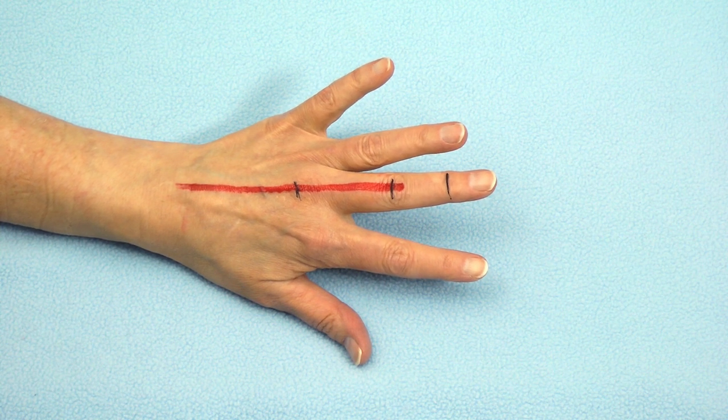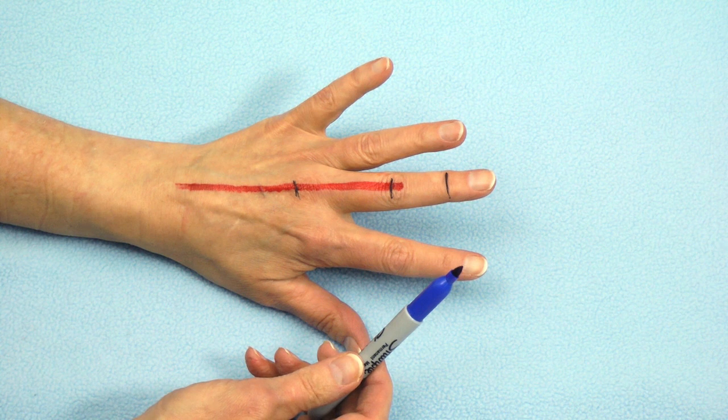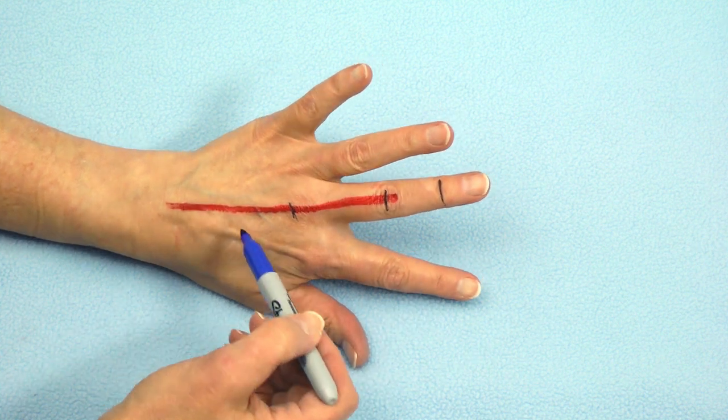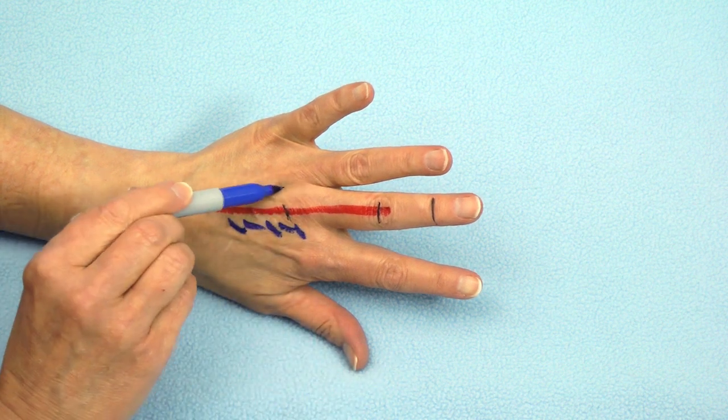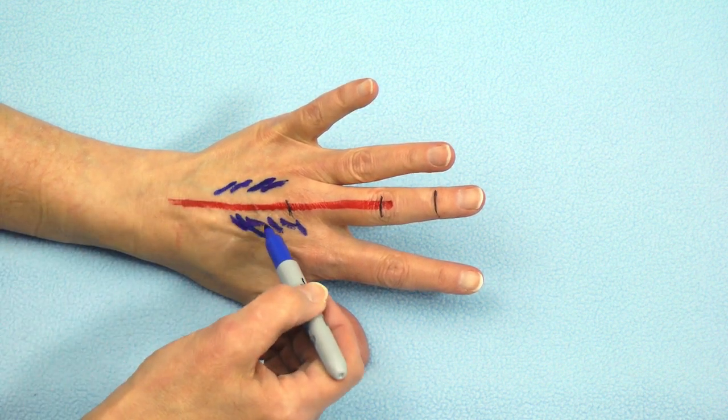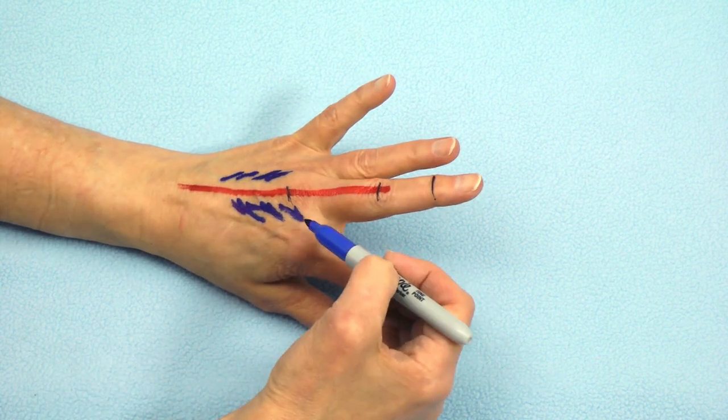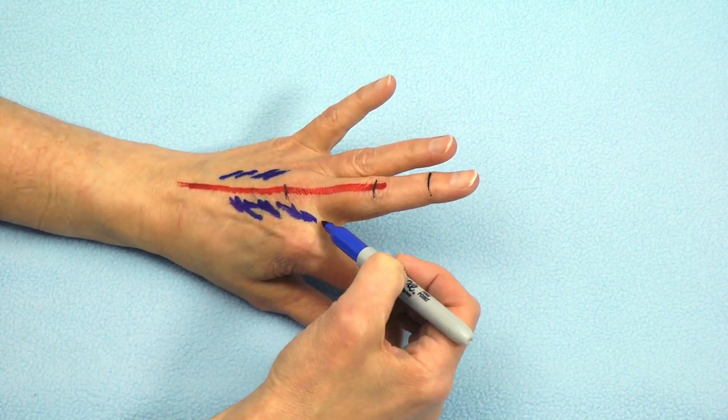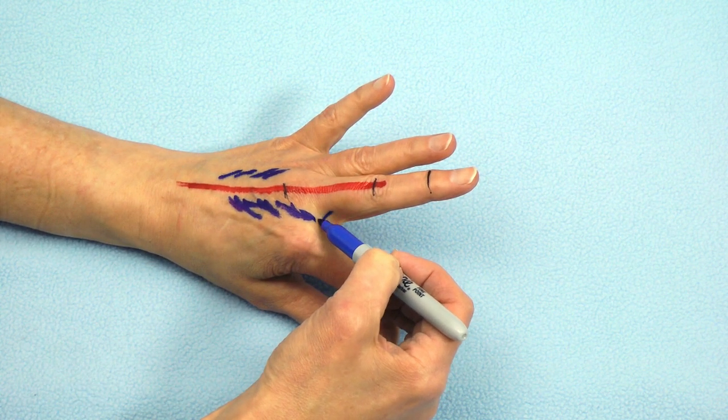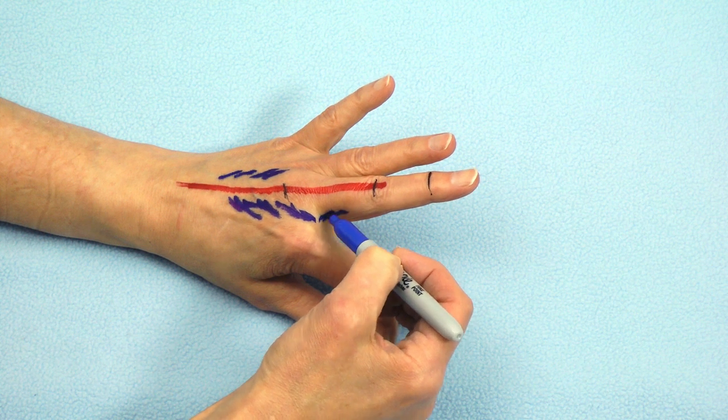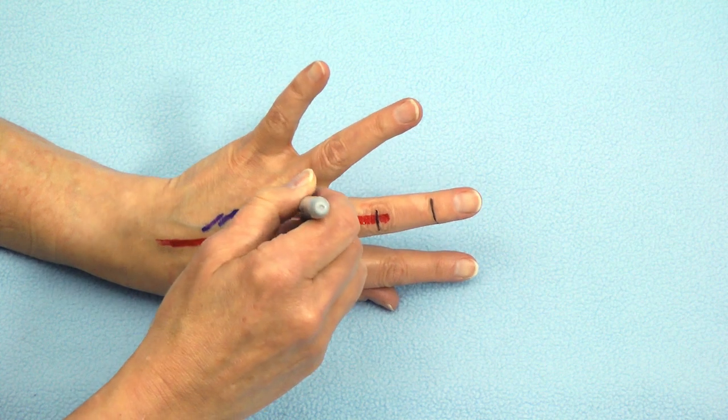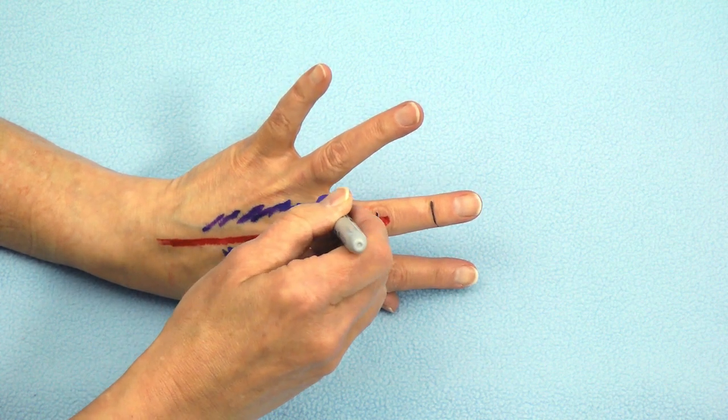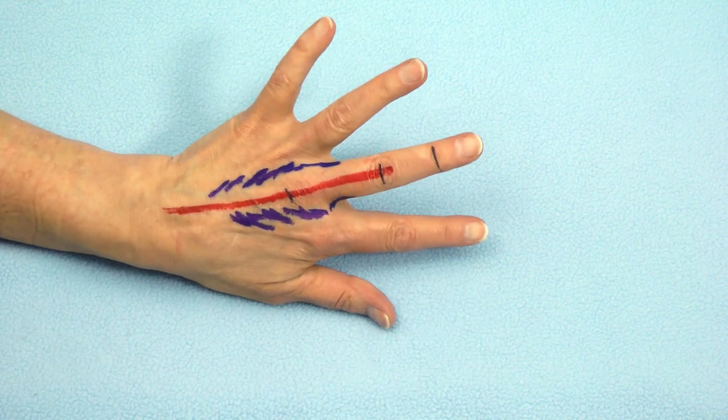We now are going to use the color blue to represent the interosseous muscles, which as we know are between the bones of the fingers. We're drawing those schematically with these blue marks. They come from the web space and insert into the dorsal apparatus at this location. We're drawing that equally on both sides, although as we know the anatomy varies based on which finger.